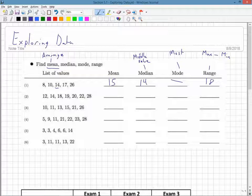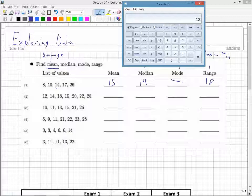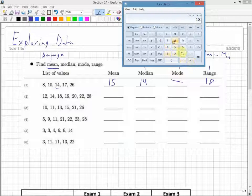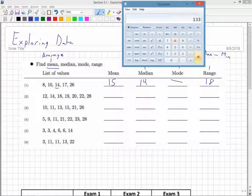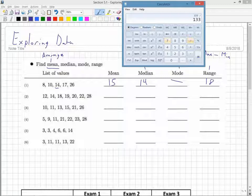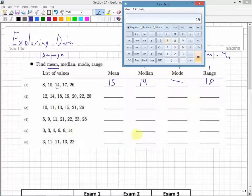Let's look at the next data set. I have 1, 2, 3, 4, 5, 6, 7 values - an odd number again, which makes it a little easy to find the median. The mean, again, I add them all up: 12, 14, 18, 19, 20, 22, 28. I get 133. There were 7 of them, so I divide by 7 to get an answer of 19.